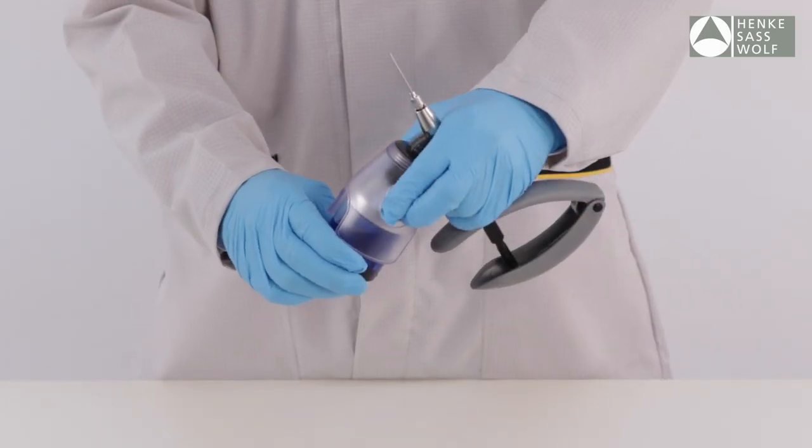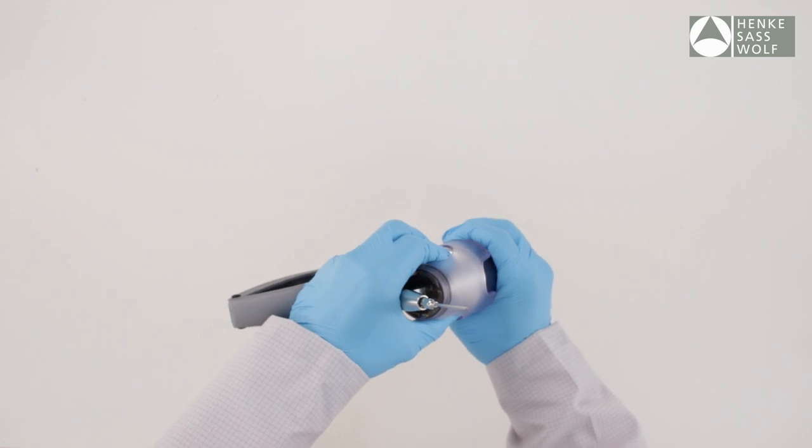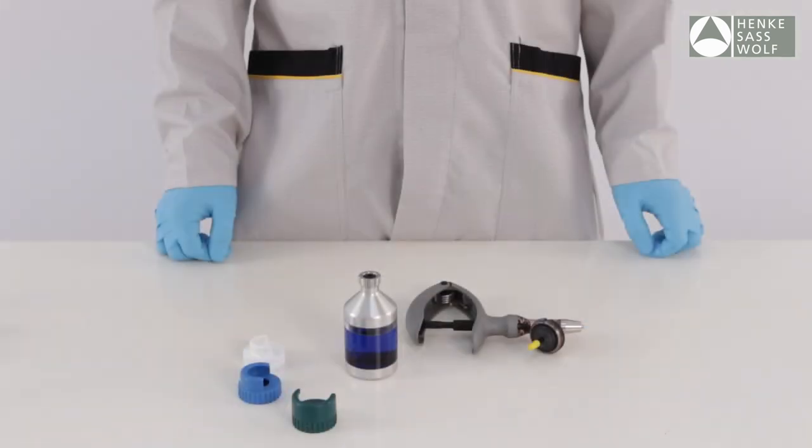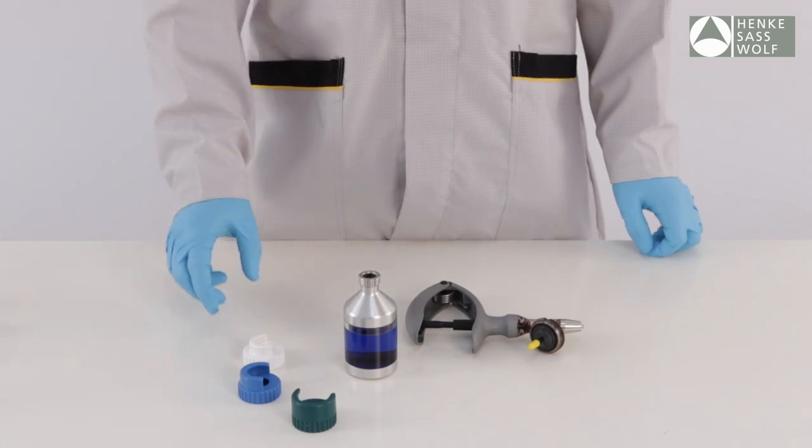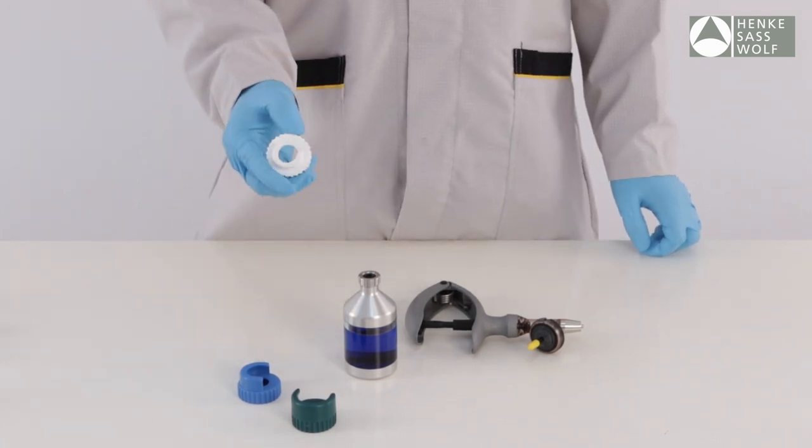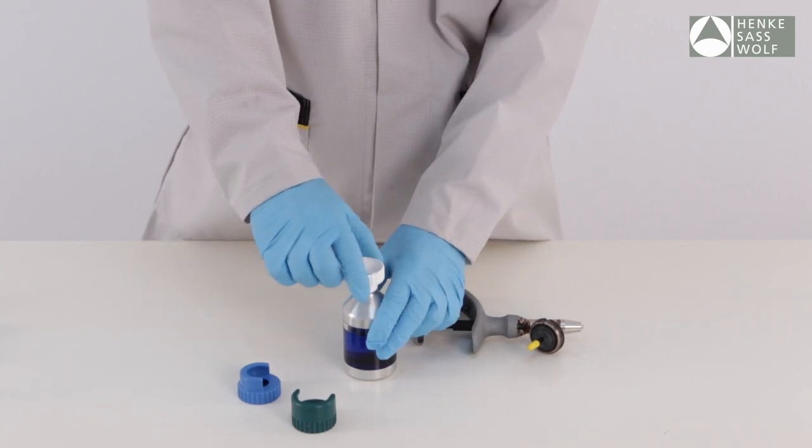Pull out the bottle by using the grip hollow on both sides of the bottle. For various bottleneck sizes, Henke SAS Wolf offers the Ecomatic with a universal adapter set. Select the corresponding adapter for the bottle you want to use.